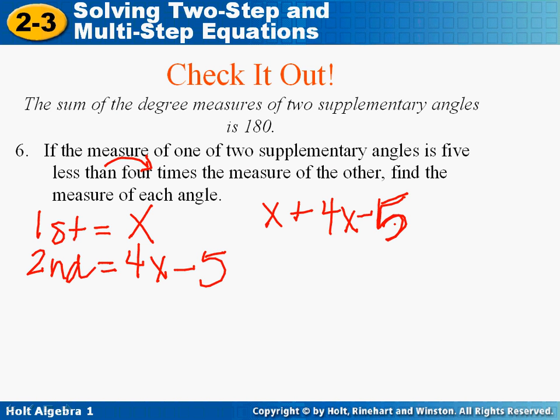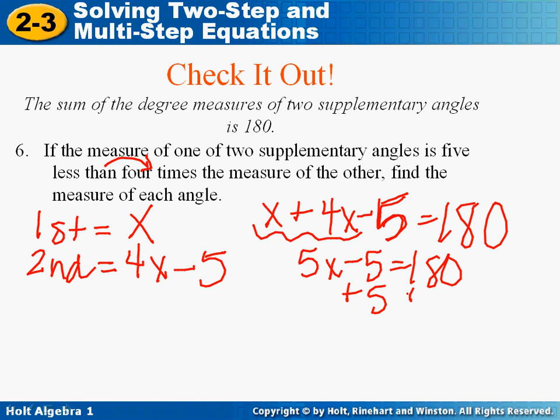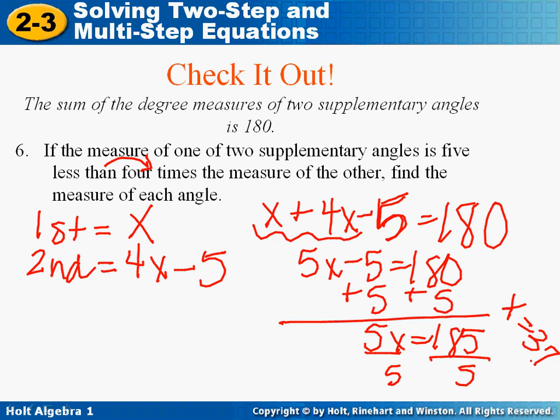Supplementary means that they add up to 180. Combining like terms, x and 4x is 5x minus 5. Add your 5, add your 5. 5x is 185, and when you divide by 5, you get 37. So my first answer is 37. I'm going to take it back over to my problem, x is 37. Take the 37, plug it into 4.